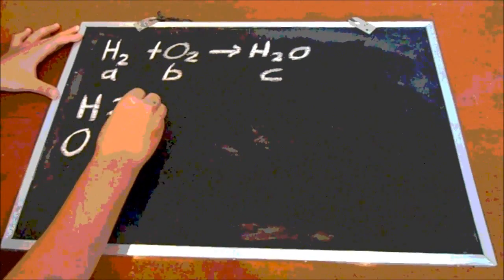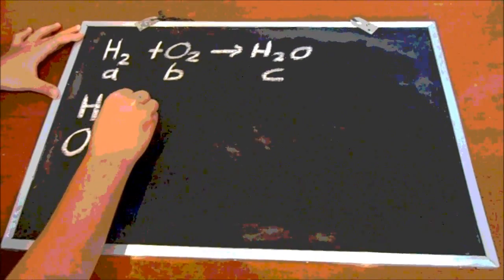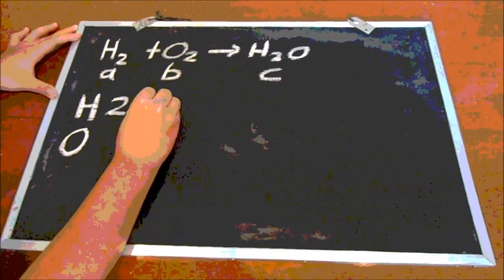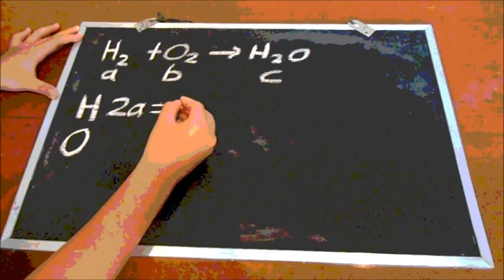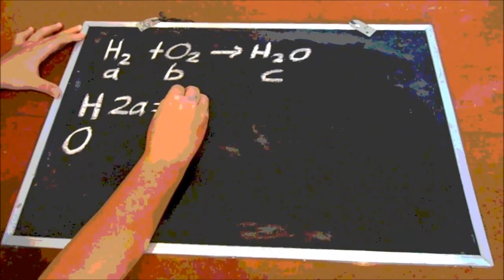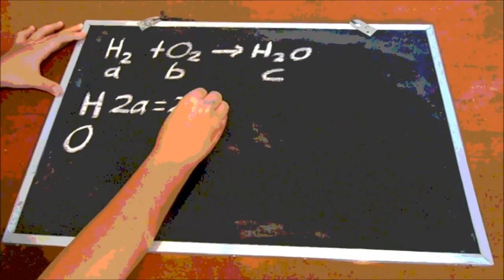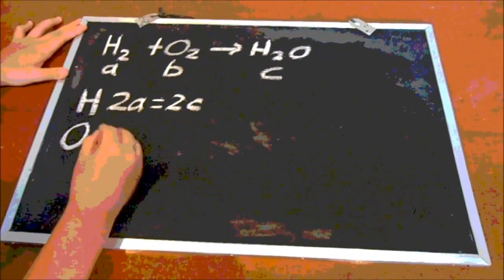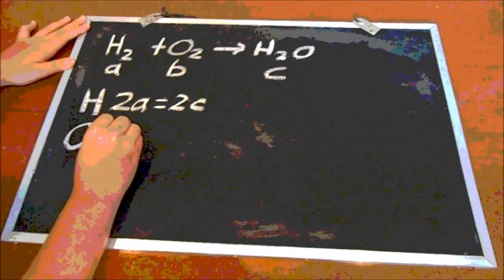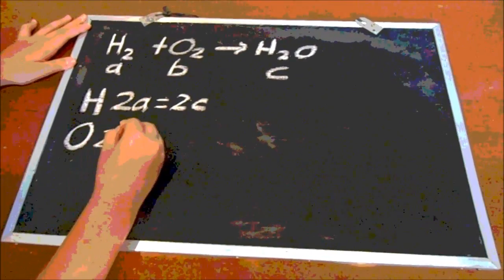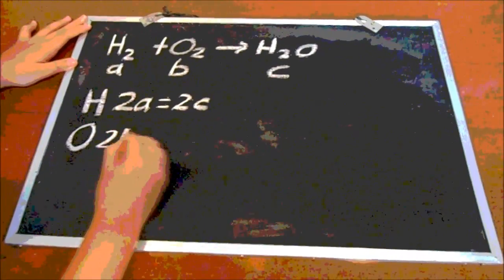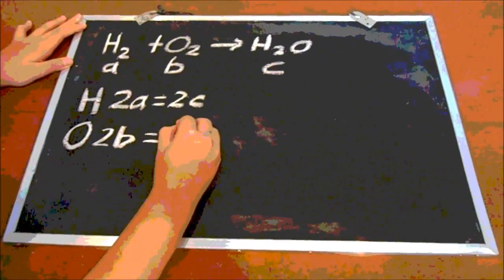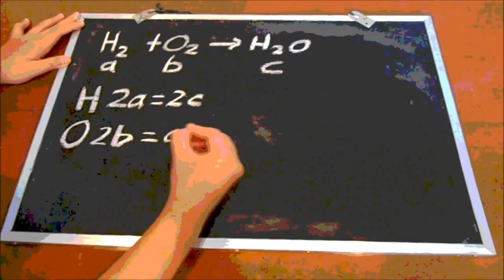And because in A there is 2 hydrogen, so we write down 2A. And in C there is also 2 hydrogen, so we write down 2C. And in B there is 2 oxygen, so we write down 2B. And in C there is only 1 oxygen, so we write down C.